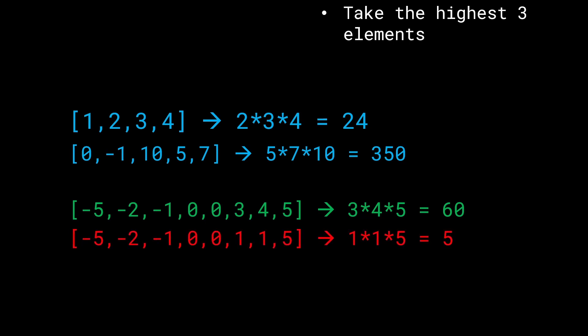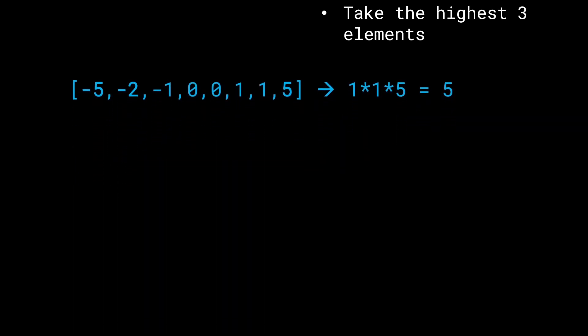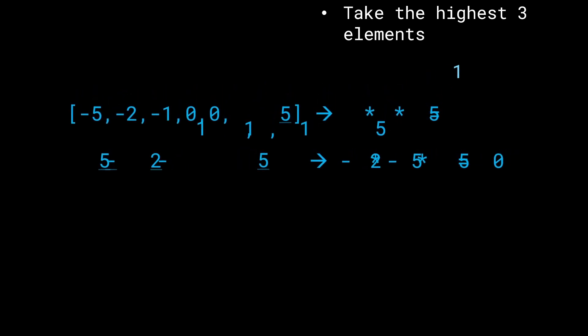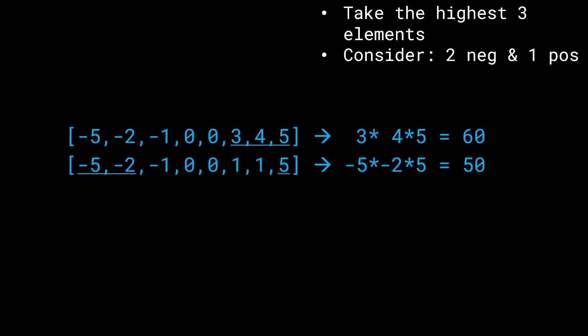Now that we have this array, what is actually the answer? The answer is -5×-2×5, giving us 50, which is indeed the correct answer. This is the second observation we need to make. Recall how when you multiply two negative numbers, it becomes a positive number again, which means we have two possible cases to consider. First, we take the highest 3 elements. And second, we have to consider the case where there are two negative values and one positive value.